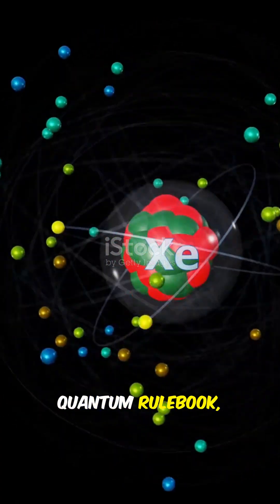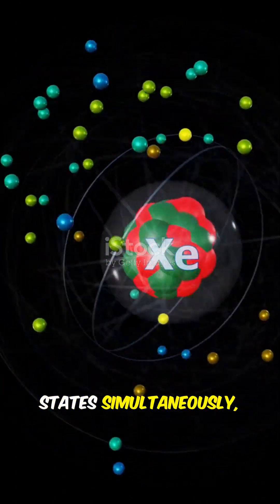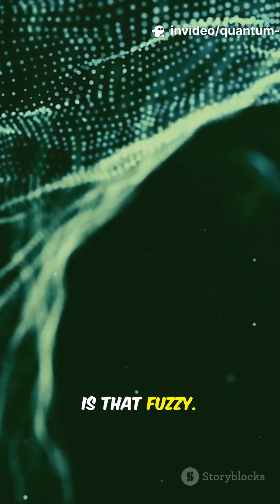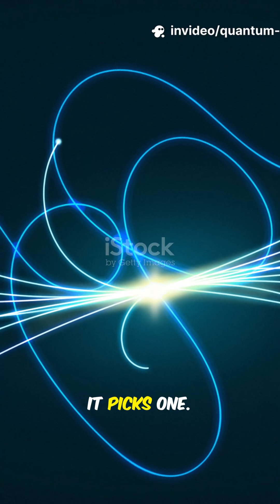Electrons, particles under the quantum rulebook, can exist in many states simultaneously, not just because we don't know, but because nature is that fuzzy. Then, when you look, measure, it picks one.